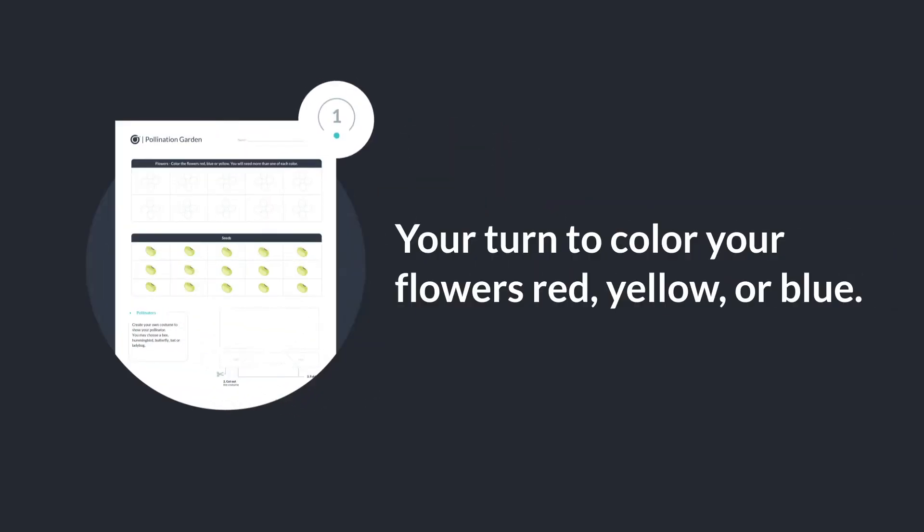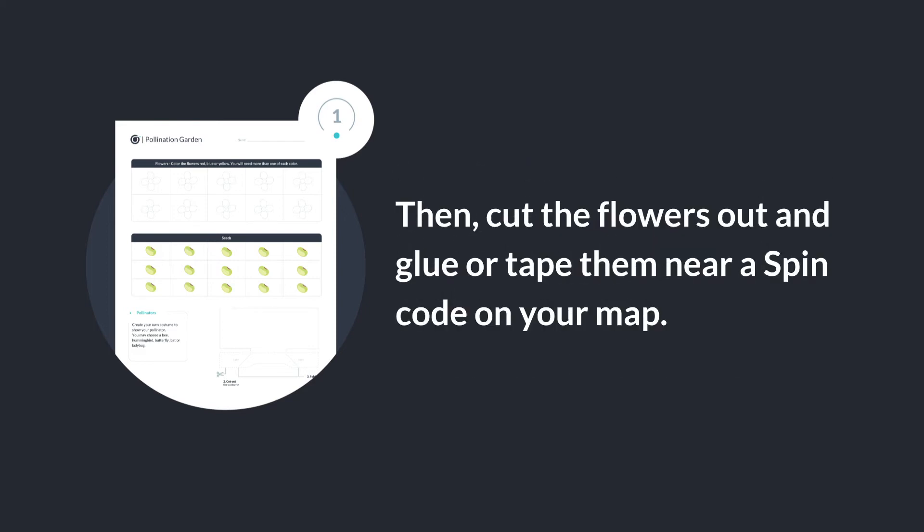Your turn to color your flowers red, yellow, or blue. Then cut the flowers out and glue or tape them near a spin code on your map.